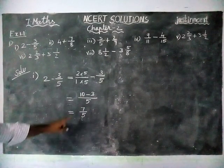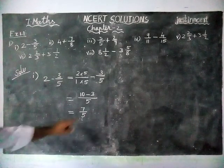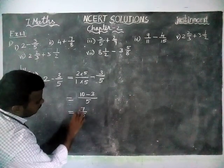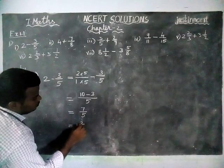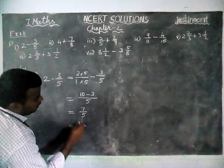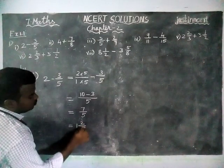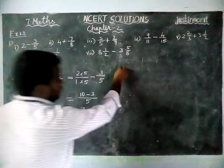We can write as it is. Otherwise we can write it into mixed fraction also. In 7 by 5: In 7, 1 five, remaining 2. So the remaining is to be written in the numerator and the divisor in the denominator. 1 and 2 by 5 we can write it.